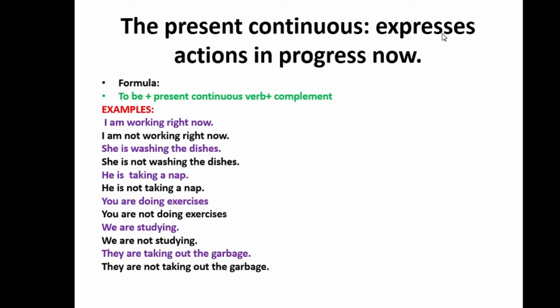So the present continuous expresses actions in progress now. Tenemos aquí una pequeña definición de lo que es el presente continuo que expresa acciones en progreso ahora. Como les dije en el video anterior, realmente expresa una acción que se esté ejecutando en el momento. So what is the formula? La fórmula: the verb to be.